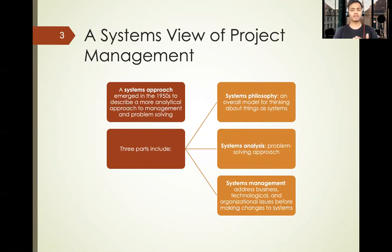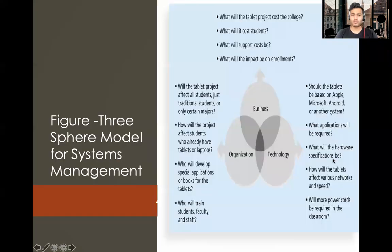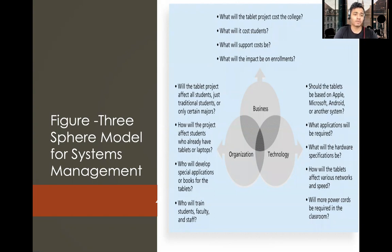System management addresses the business, technological, and organizational issues before making huge changes to the system. This is the three-sphere model of system management, which is important in project management. The three spheres are business, organization, and technology. These models have a big impact on system management — a project can succeed or fail based on them.